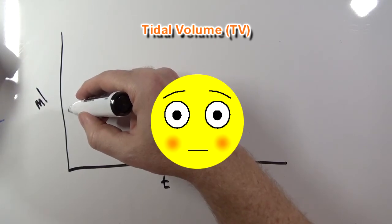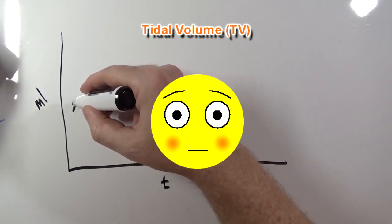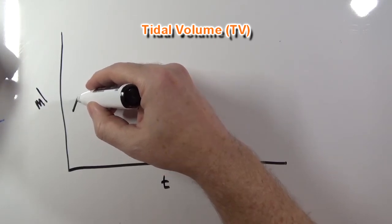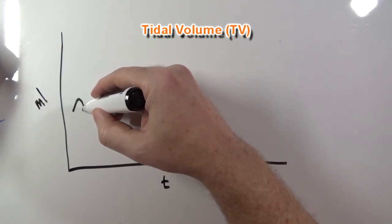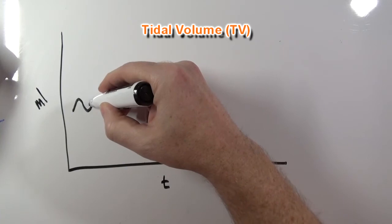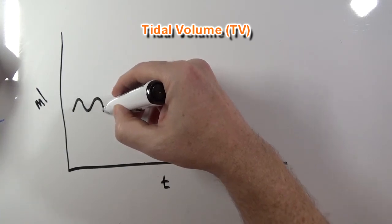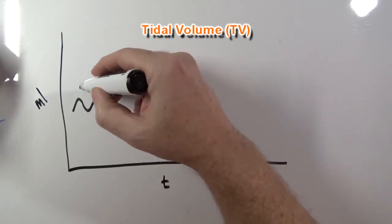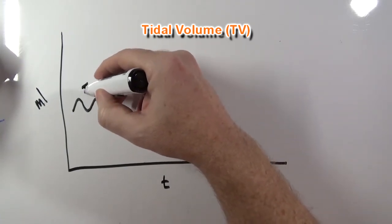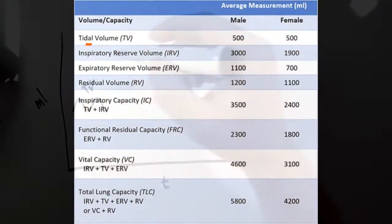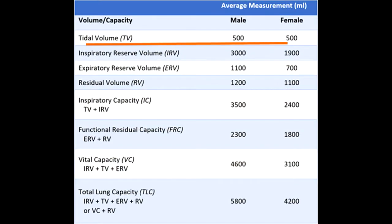So we would breathe in, breathe out — breathe in, breathe out. This is tidal volume. The average tidal volume for both males and females is 500 milliliters.